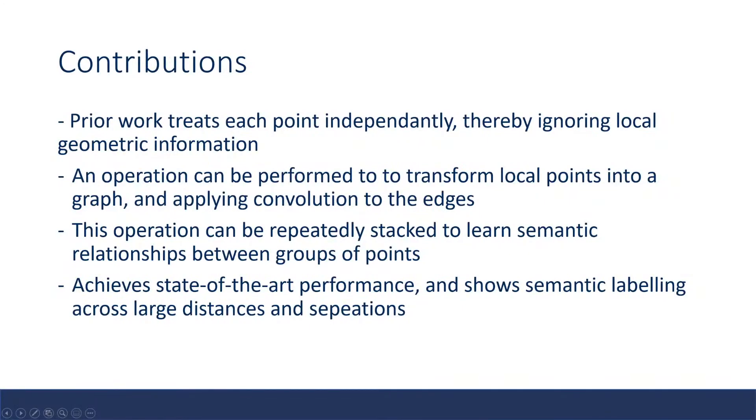The paper Dynamic Graph CNNs tries to achieve CNN-based performance on point clouds. How this is accomplished is that point clouds are transformed into graphs, and once turned into a graph, the principles of convolutions can be applied to the graphs themselves. This work extends previous work done by PointNet but incorporates local geometric information through graphs.